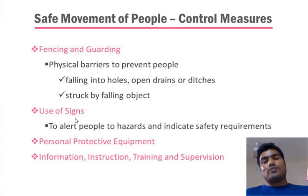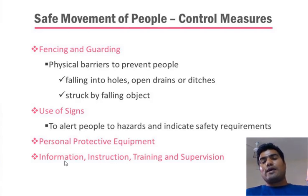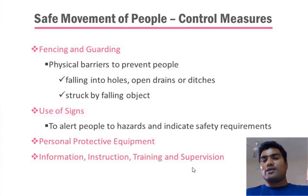Use of signs at the workplace: signs should be used to alert people to hazards and indicate safety requirements. Personal protective equipment (PPE) should be used to support safe movement of people. Information, instruction, training and supervision should be provided for safe movement of people at the workplace. These are the control measures for safe movement of people.